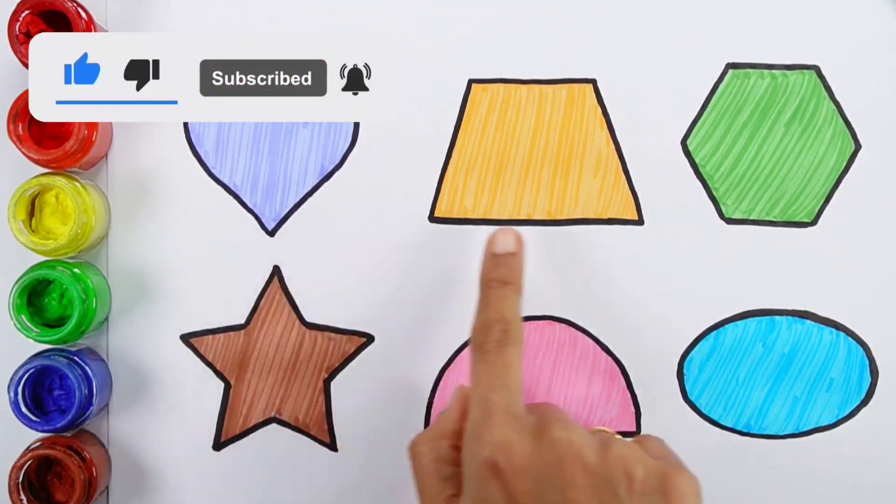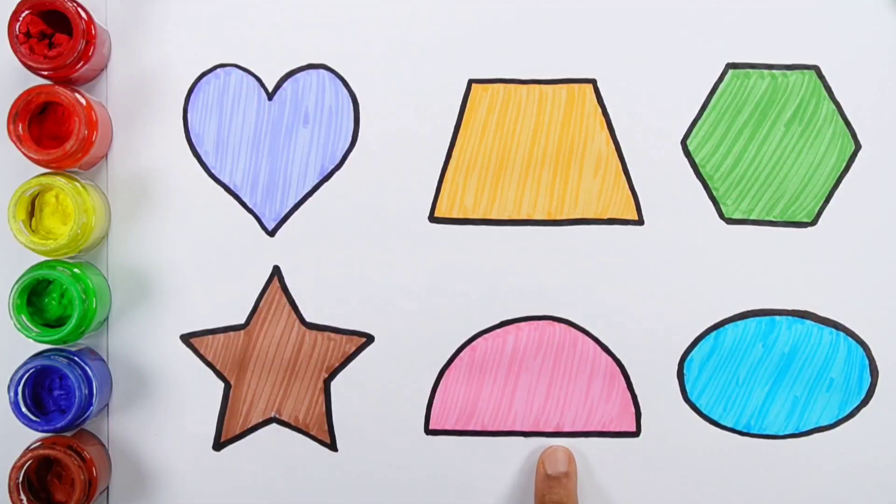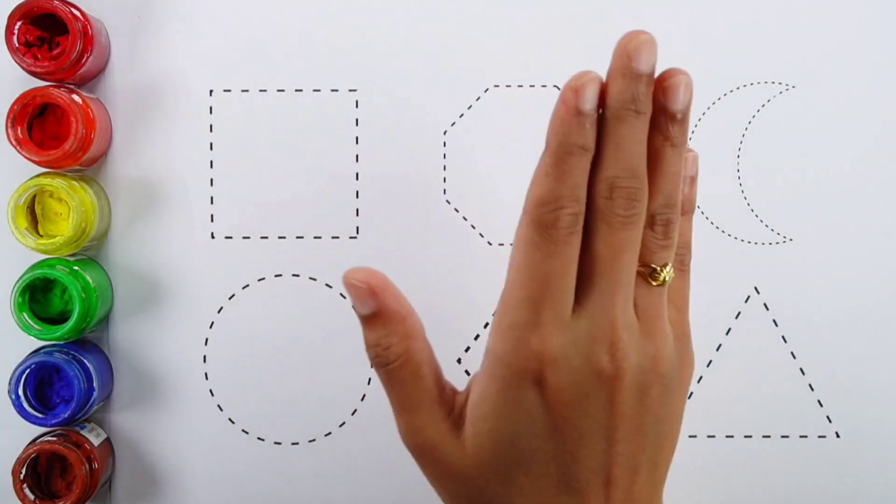Heart, trapezoid, hexagon, star, semicircle, oval. Hello guys.